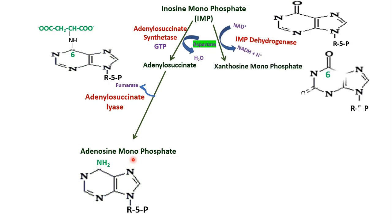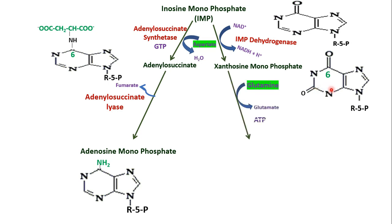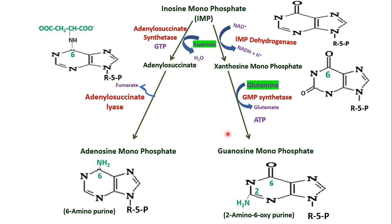For GMP synthesis: IMP is oxidized by IMP dehydrogenase in the presence of NAD to form xanthosine monophosphate (XMP). We need an amino on the 2nd position to form guanosine. So glutamine donates its amino group, catalyzed by GMP synthetase, requiring ATP, to form guanosine monophosphate (GMP). In GMP, the 2nd position is amino and the 6th position is oxy. Notably, GTP is required for AMP synthesis, while ATP is required for GMP synthesis.